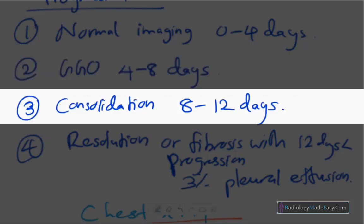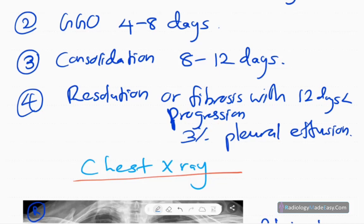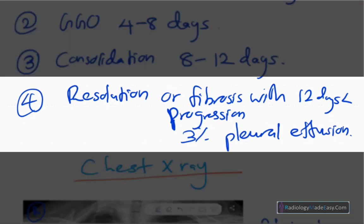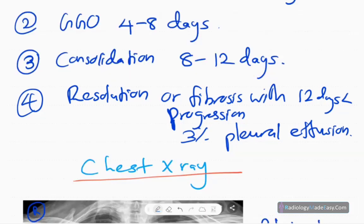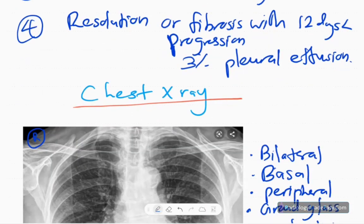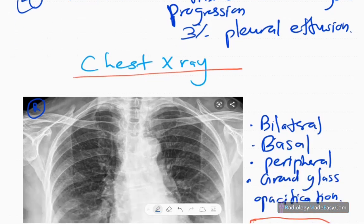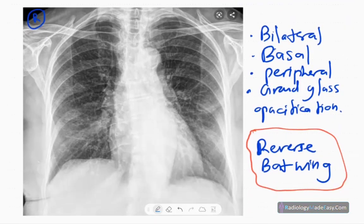The disease progresses to consolidations from 8 to 12 days. After 12 to 14 days, there may be resolution, or in immunocompromised patients or those with other illnesses, it can progress to consolidations with fibrosis and secondary bacterial infections. About 3 percent of patients can develop pleural effusions.